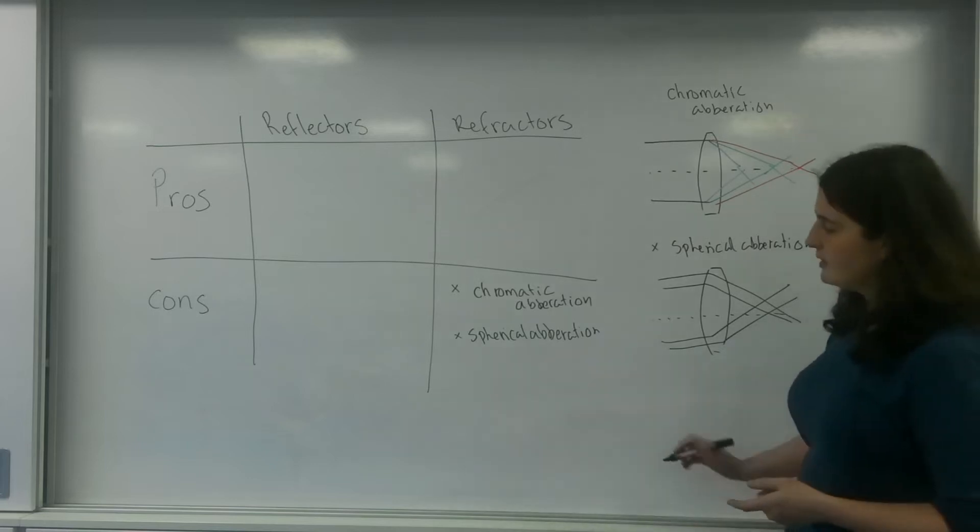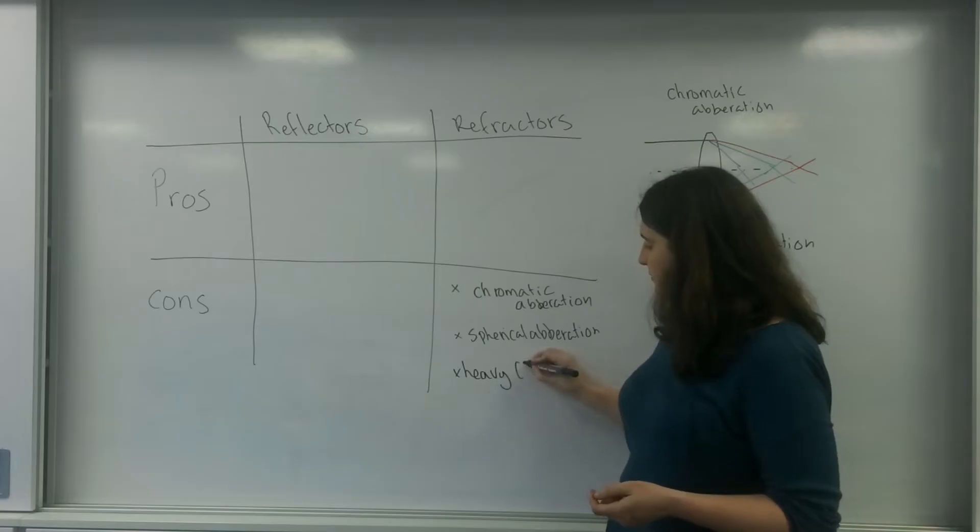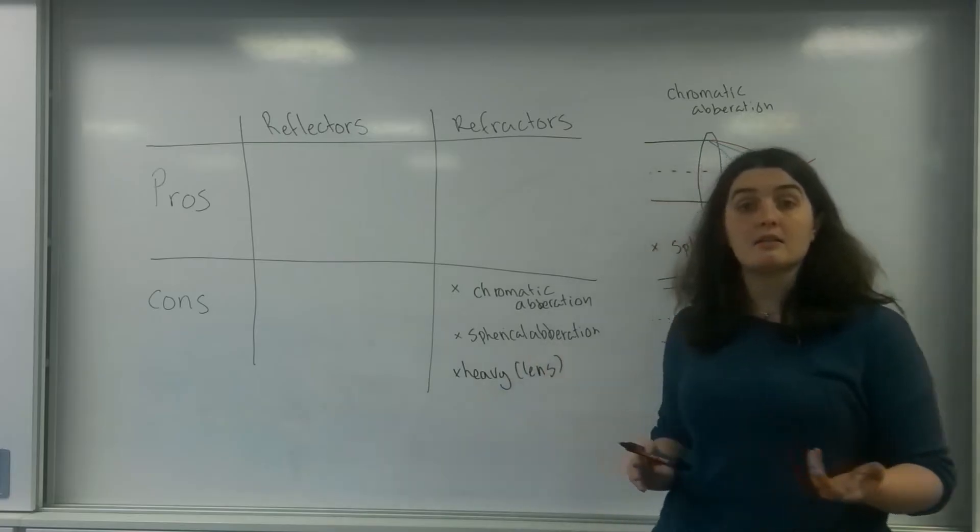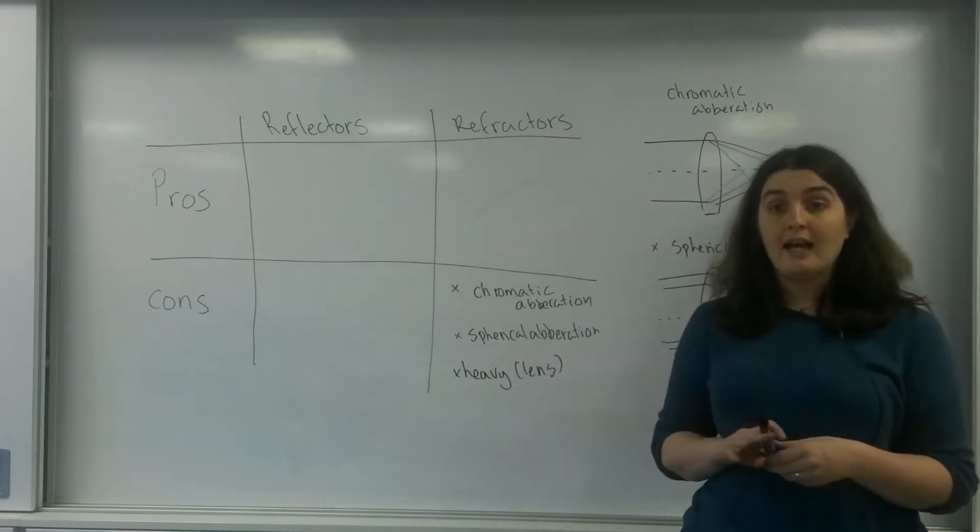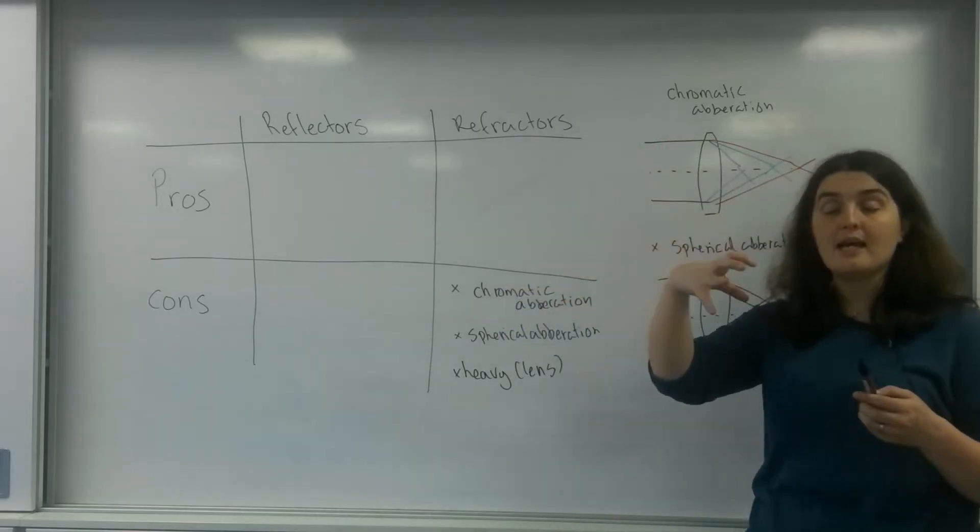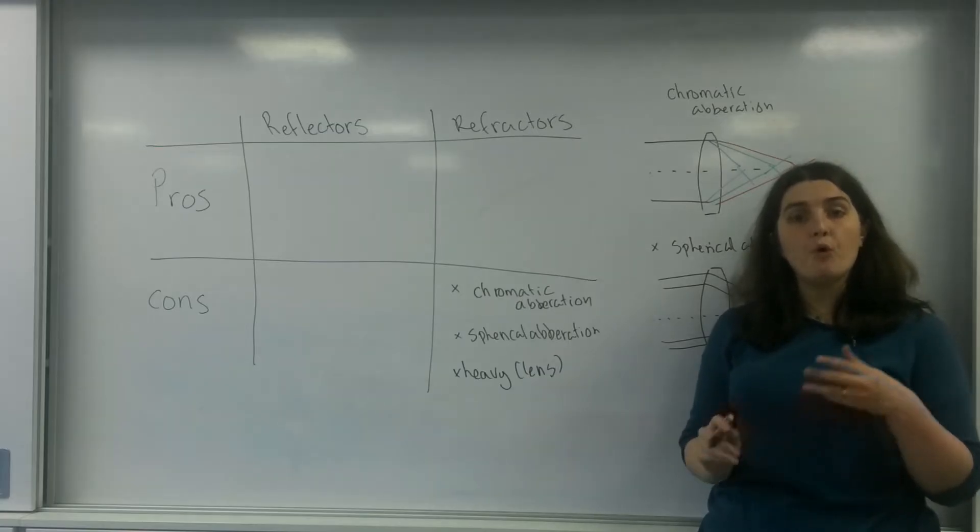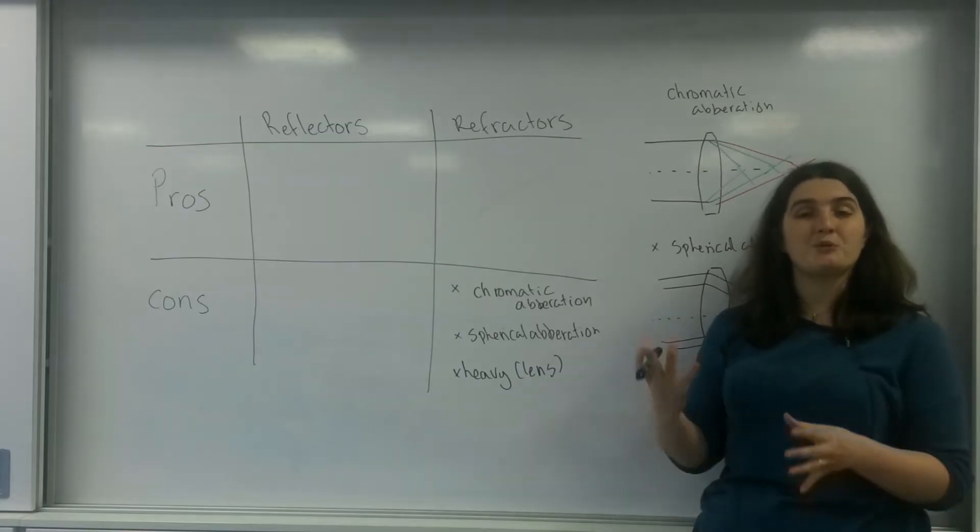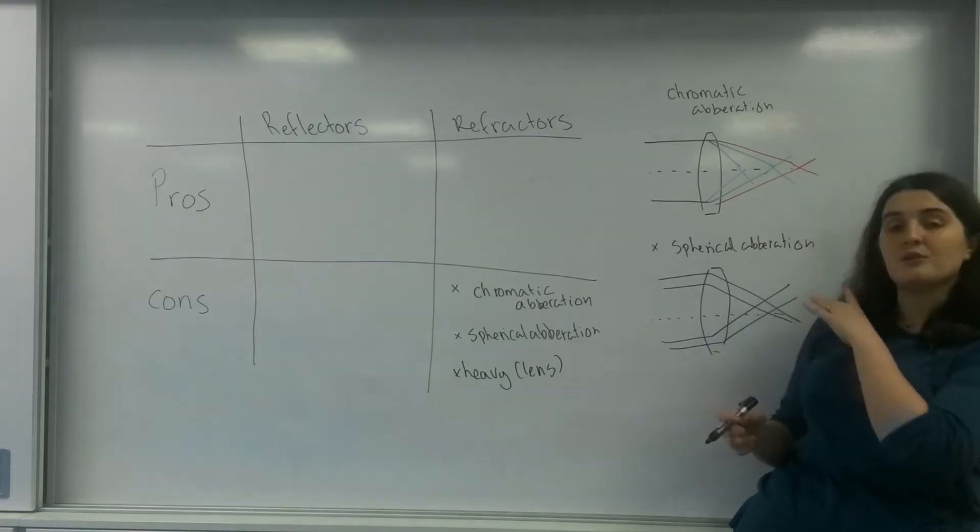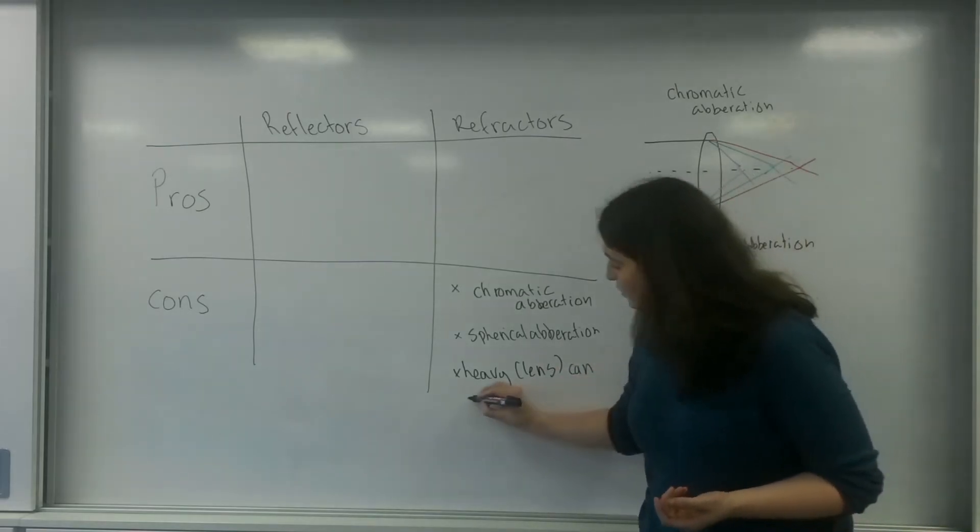Another con of refractors is they're heavy. We have glass, glass is heavy. And if you've got it on the end of the thing here, if it's really big, it can cause warping and distortion of the actual telescope, which can of course affect the image. So heavy lenses can cause distortion.